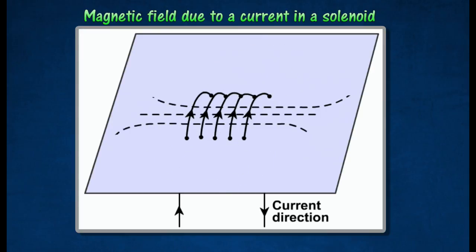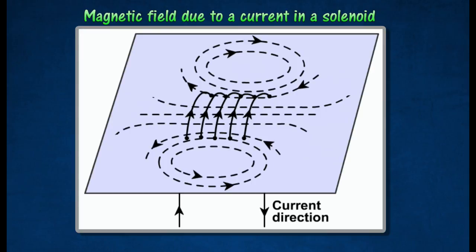Outside the solenoid, the pattern is similar to that of a bar magnet, with one end of the solenoid acting like a north pole and the other end like a south pole.